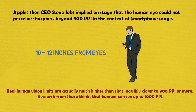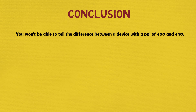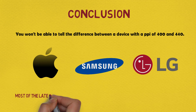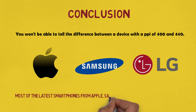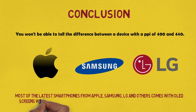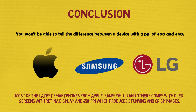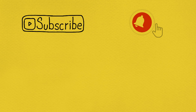Real human vision limits are actually much higher than that, possibly closer to 900 PPI or more. Research from Sharp thinks that humans can see up to 1000 PPI. So the conclusion is that you won't be able to tell the difference between a device with a PPI of 400 and 440. Most of the latest smartphones from Apple, Samsung, LG and others come with OLED screens with Retina display and 450 plus PPI, which produces stunning and crisp images and is good enough for humans. Do let us know in the comments below which mobile phone you are using and we will tell you the PPI of your screen.